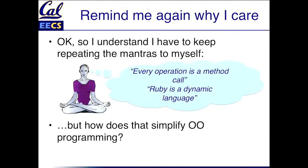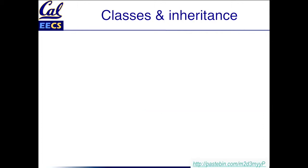Let's talk about actual object orientation in Ruby. I've kept saying this mantra: everything is an object, everything is a method call, Ruby is a dynamic language. So the question is why should you actually care about this? How does it actually simplify object-oriented programming? Let's look at a simple example to walk through.